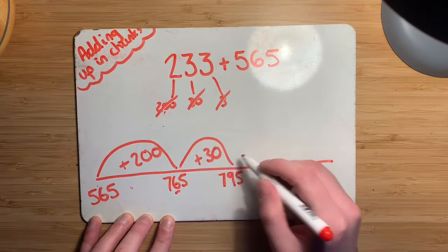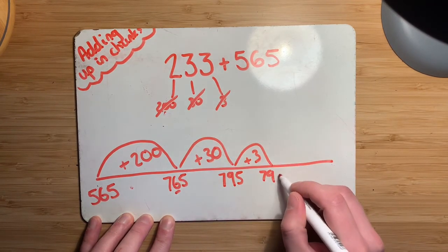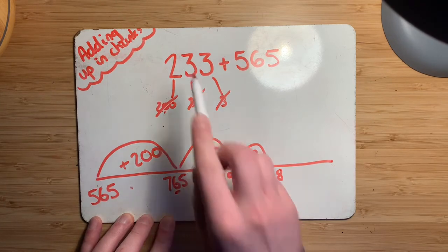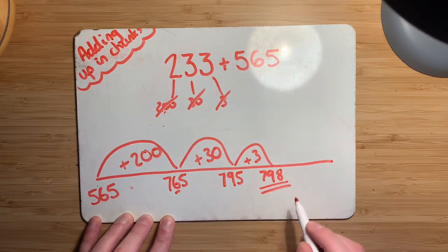And then finally, I'll add on my last three, which is nice and easy. That'll take me up to 798. So now I know that 233 plus 565 equals 798.